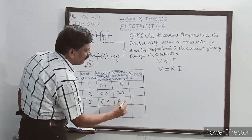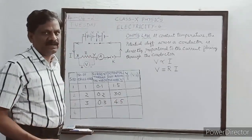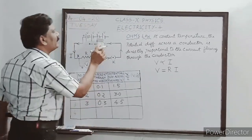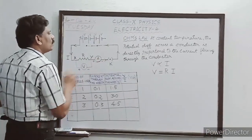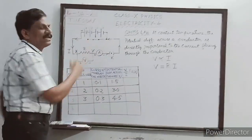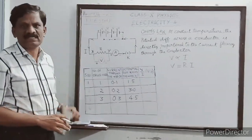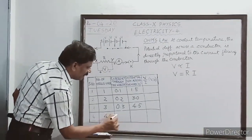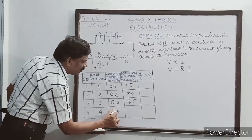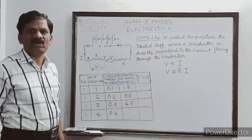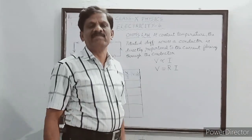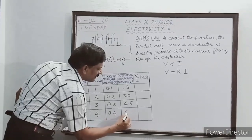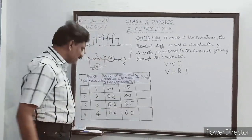In the fourth case, we include all four cells. The current flowing through the resistor is 0.4 ampere. Correspondingly, the potential difference across the resistor has also increased to 6.0 volt.